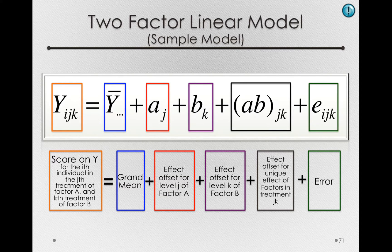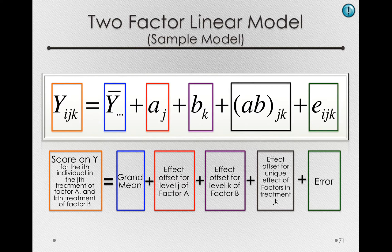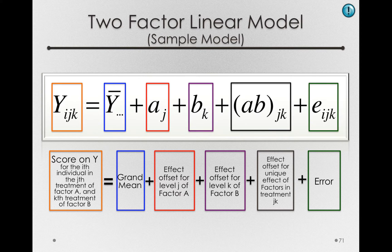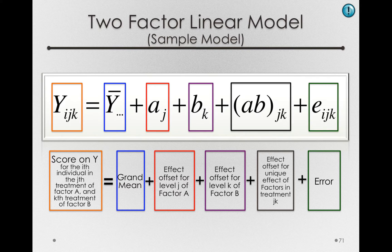So our sample model reads as y_ijk equals y bar dot dot dot, the overall grand mean in our sample, plus the a sub j's, plus the b sub k's, plus the ab_jk's, plus the individual error, the residuals from our model.